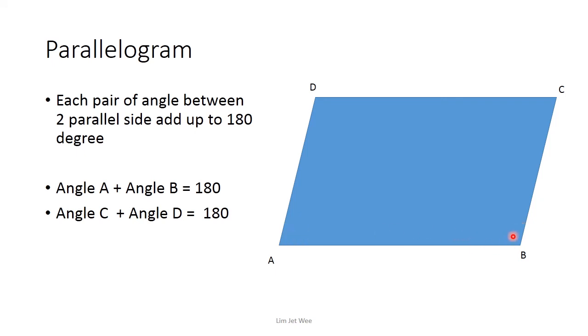So what it actually means is angle A and angle B, if I add them up, is actually 180. It's quite easy to understand because if I extend the AB line, this part becomes AB. The same also on the top. So angle C and angle D, if I add them up, is 180 degrees.